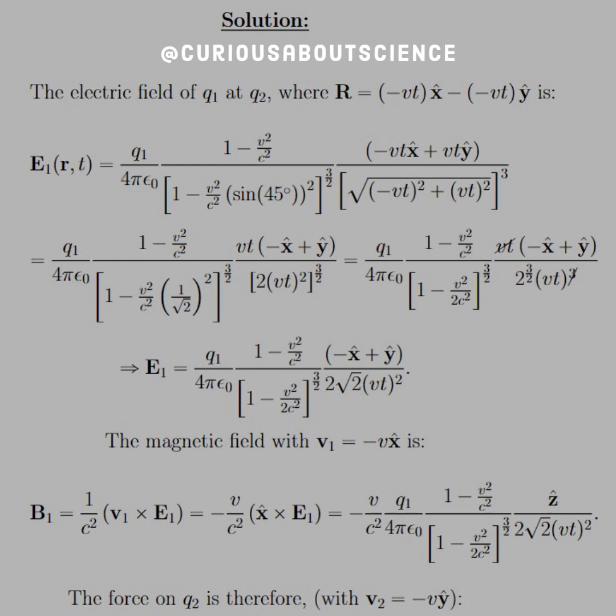Sine 45 is 1 over root 2. We push that through to get one-half. Factor everything out and multiply through, which we see in the next step. We have the R vector over R squared, but instead of writing R-hat, we use the R vector, so we multiply by another magnitude—that's where the cube comes from. Let everything sift through and see what can cancel.